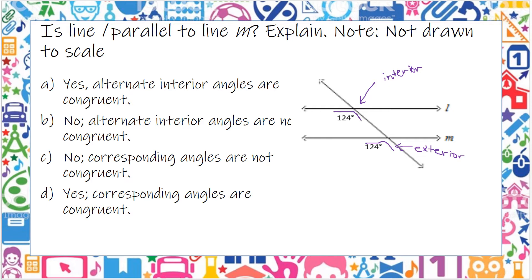Well, this 124 at the top is in the bottom left-hand side here of this line L. And line M, our 124 is also on the bottom left-hand side. So those would be corresponding, which means that they are congruent.